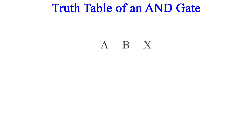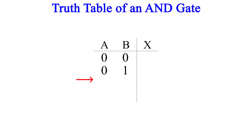Let's look at the truth table of a two-input AND gate. The inputs are A and B, and the output will be called X. Recall from our video on the inverter that input variables are typically given letters close to the beginning of the alphabet, while output variables are typically given letters close to the end of the alphabet. So under our inputs, we're going to count up in binary beginning with 0: the first row is 0,0 — the second row is 0,1 — the third row is 1,0 — and the fourth row is 1,1.